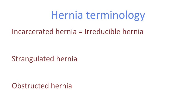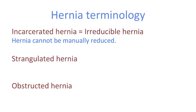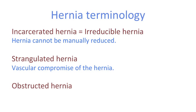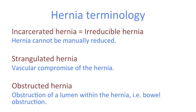The terminology for hernias is straightforward. An incarcerated hernia cannot escape — it is the same as an irreducible hernia. Strangulation describes a hernia with vascular compromise: the neck is so tight it impedes venous return, causing venous congestion, oedema, and eventually arterial insufficiency and necrosis — this is a surgical emergency. An obstructed hernia is also a surgical emergency: if bowel is involved, the lumen may be obstructed causing bowel obstruction. An incarcerated hernia is not necessarily strangulated or obstructed, although there is a risk of progression.